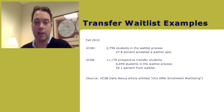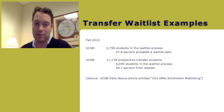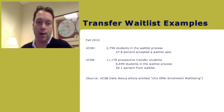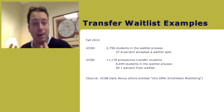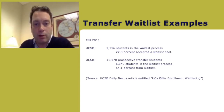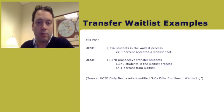UCSB had better stats with a bit more thorough data. This gets into the yield rate — that's what you want to find out: the yield rate on the waitlist. You can ask about the yield rate for transfers the previous year, which can help. There were 11,178 prospective transfer students to UC Santa Barbara and 6,049 students were in the waitlist process.